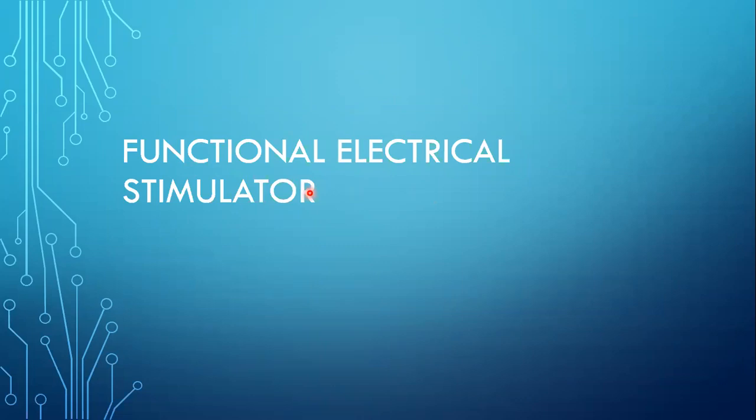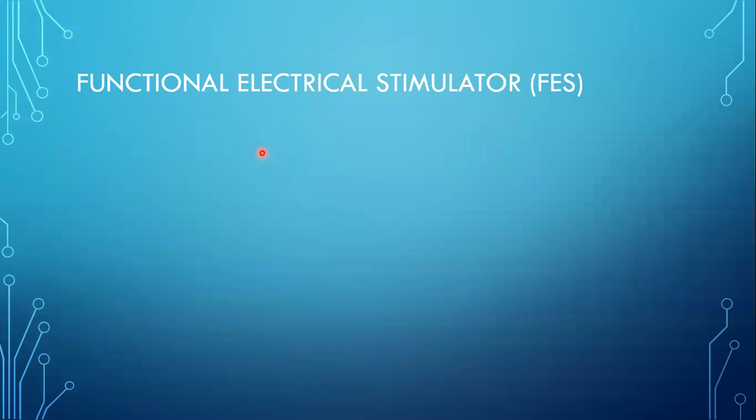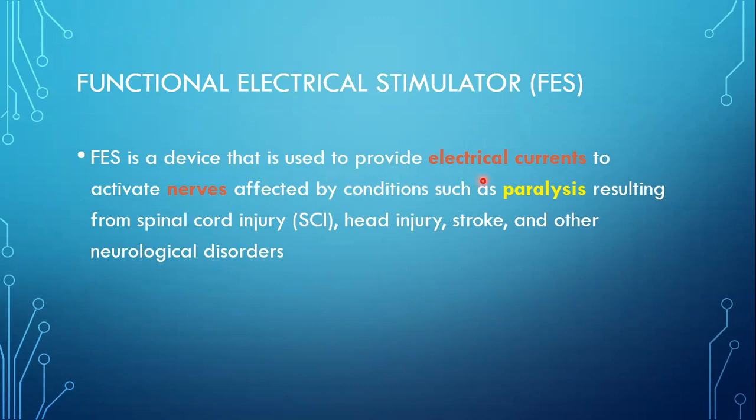Let's look at Functional Electrical Stimulation, which comes in unit three. FES is a device that is used to provide electrical currents to activate the nerves affected by conditions such as paralysis resulting from spinal cord injury, head injury, or stroke.